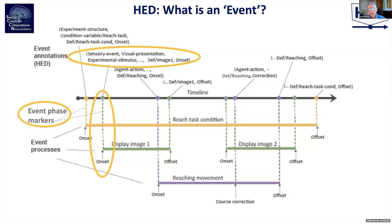Each marker is associated with an event and has a description in HED. HED tools create a table of events, and in cases where events of the same type overlap in time, one must include in the HED description an index scheme to specify which event an offset refers to — for instance, if two stimuli of the same type are being delivered simultaneously and one offsets, you must say which is which. HED tools create an event table from all of these markers using reasonable assumptions about the interpretation of the markers.